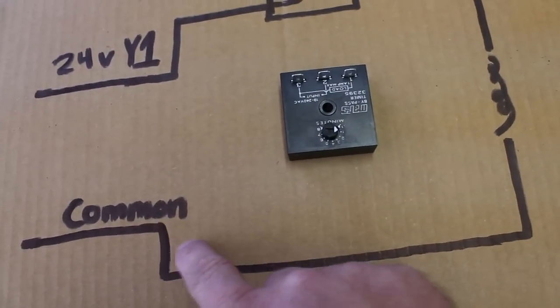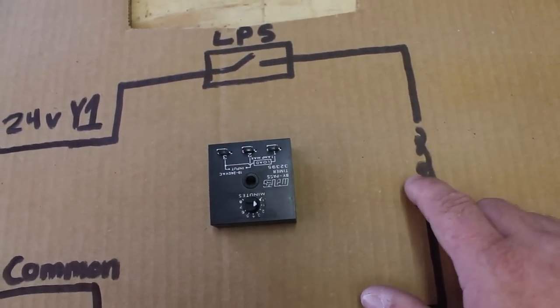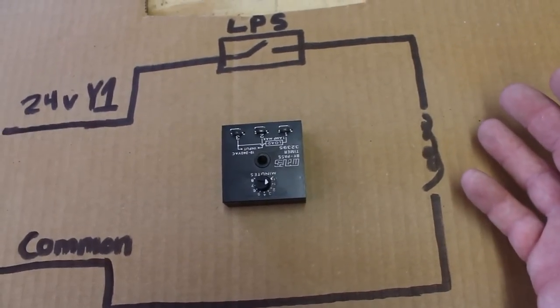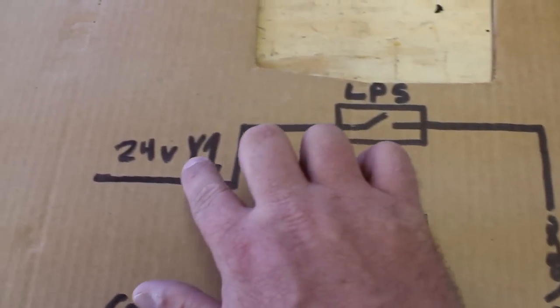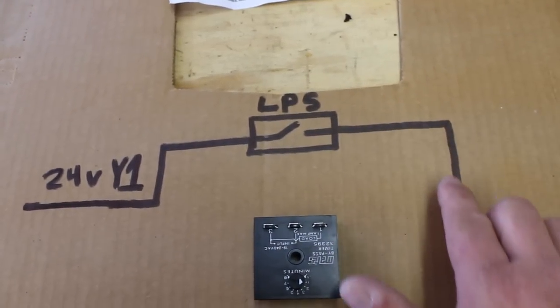We have our common wire running around to one side. This is the contactor coil in this particular case, but could be a coil for any relay depending on your application. We have Y1 going here to the low pressure switch then coming out.